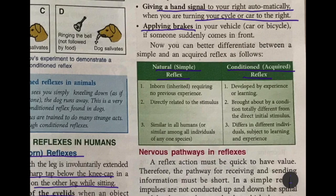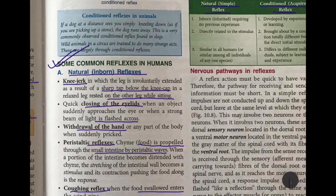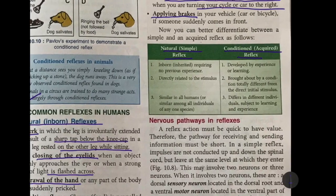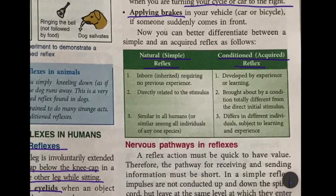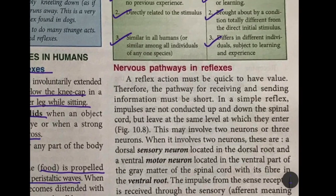The differentiation between acquired reflex and natural reflex is your assignment for this week, along with writing down common reflexes in humans — both natural and conditioned. A natural reflex is inborn, directly related to the stimulus, and similar in all humans. A conditioned reflex is developed by experience, brought about by a condition totally different from the direct initial stimulus, and differs between individuals according to how that person has learned.